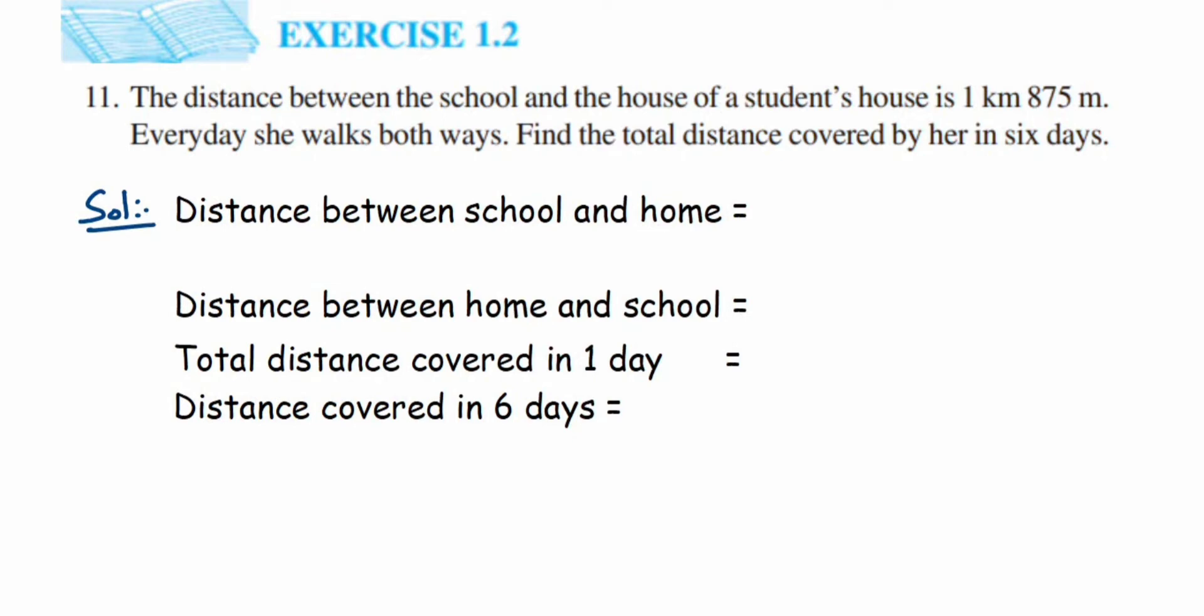Hey everyone, so here's a question from exercise 1.2, it's the 11th question. This is from the Knowing Our Numbers chapter of class 6. The question is: the distance between the school and the house of a student's house is 1 kilometer 875 meter. Every day she walks both ways. Find the total distance covered by her in six days.